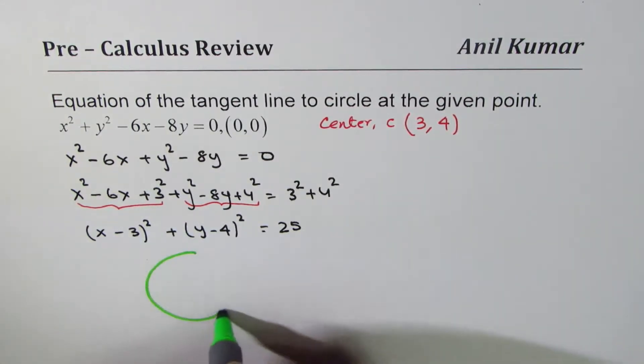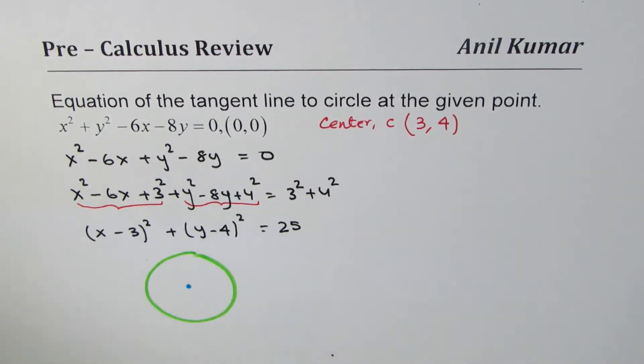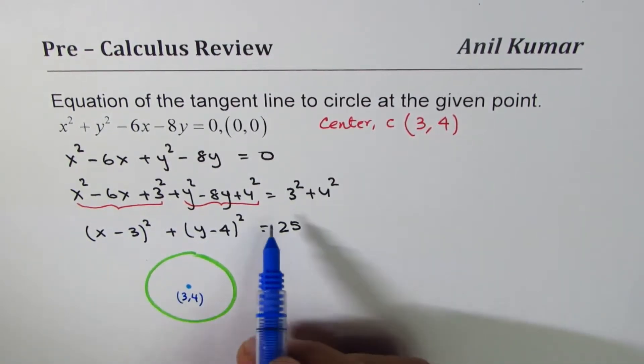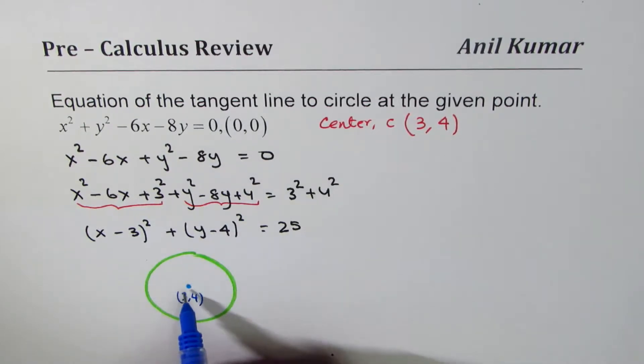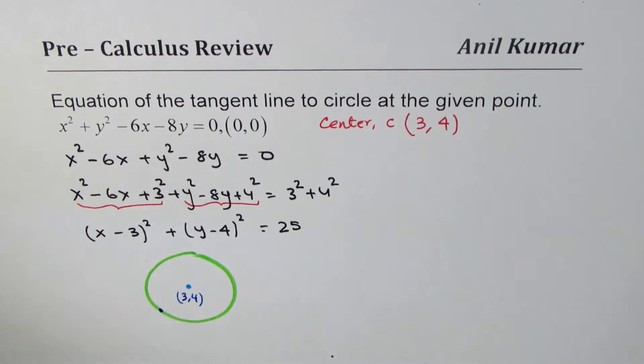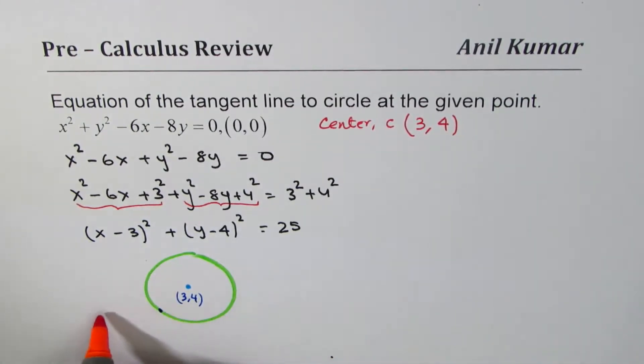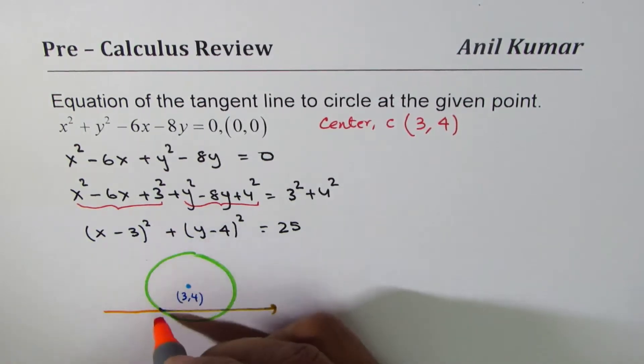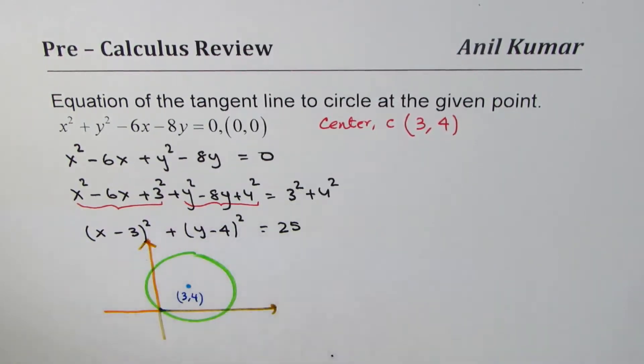So (3,4) is the center. Let me just make a circle here. Now this circle has a center which is at (3,4) and the radius is 5. So this circle has a center at (3,4). The point given to us is kind of the origin, so let's say that's the origin. So from here three units to the right and four... Let me make the axis so that it helps us out.